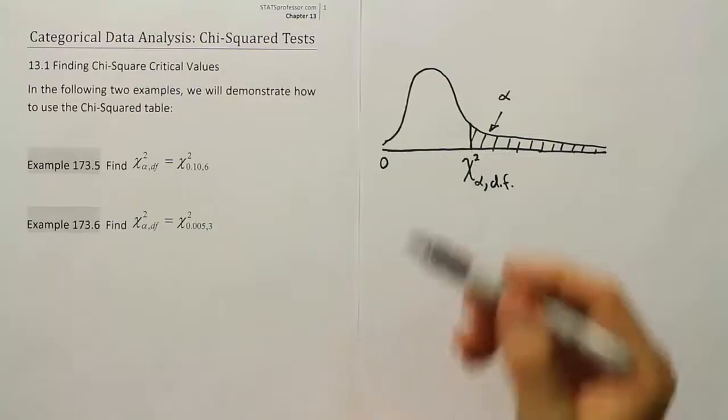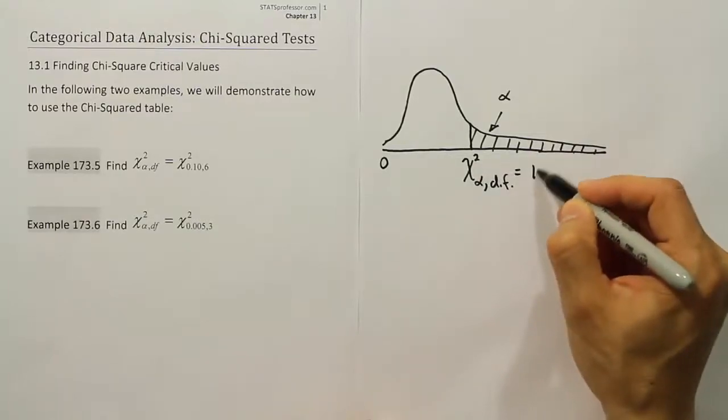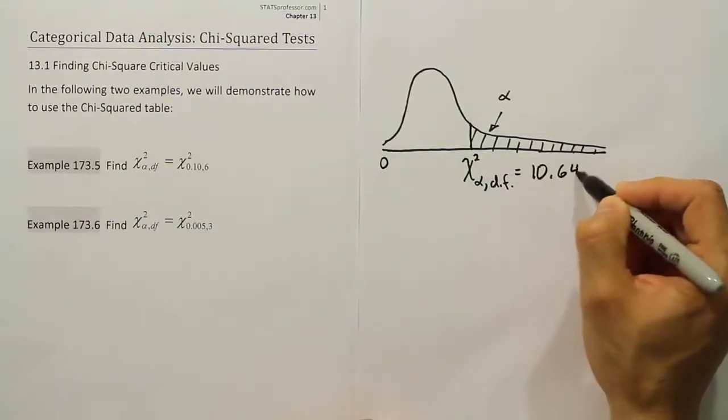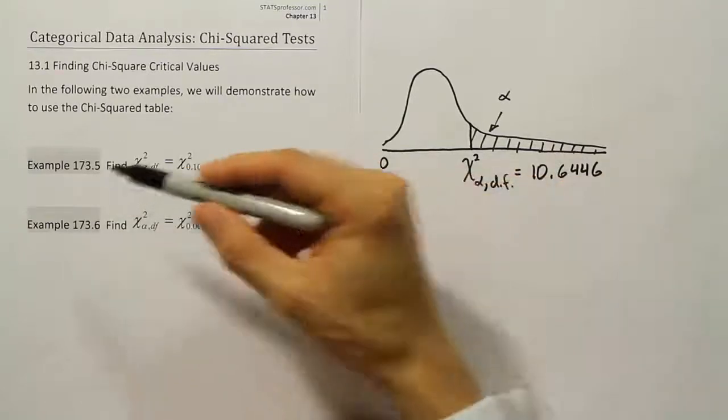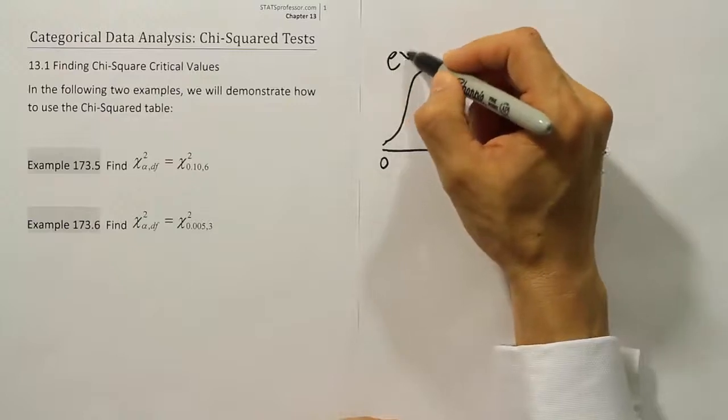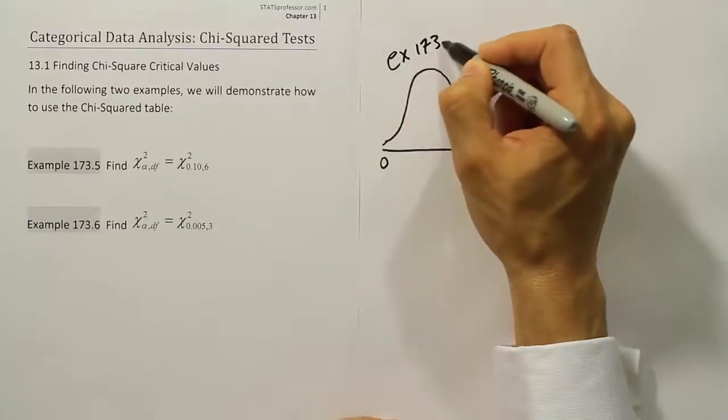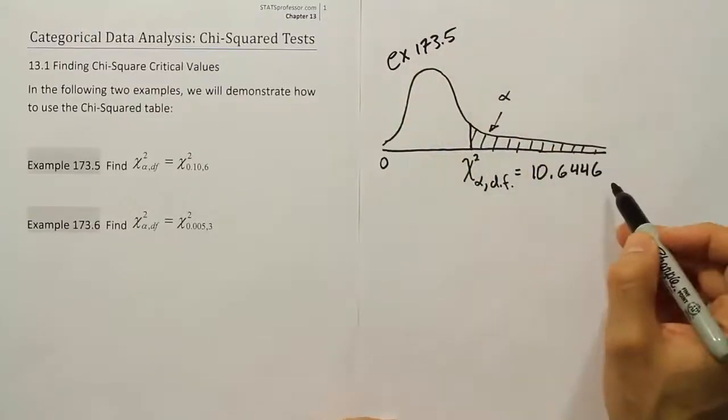So we found the value 10.6446. That is your chi-squared critical value for example 173.5.